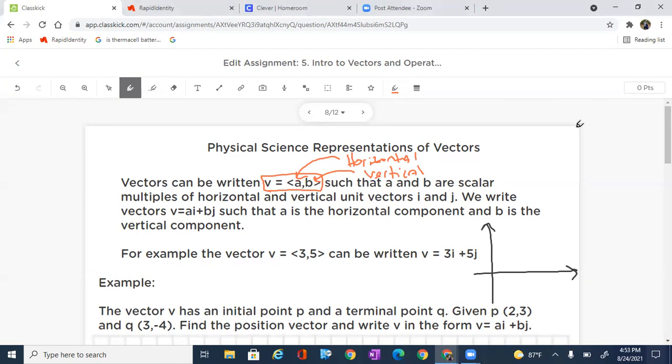When we write these, we can write it as V equals AB with those brackets around the outside, or we can write it in terms of AI plus BJ. You'll notice that is written right there, where A is still the horizontal, B is still the vertical component.